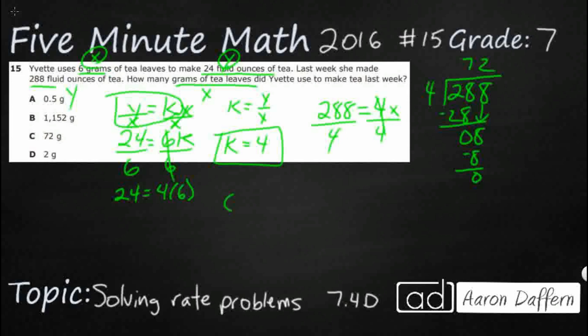So I'm going to say 6 grams over 24 fluid ounces, and then we've got our 288 fluid ounces. We know that we put our like labels together. And let's say we're just looking for X right there. That's the grams of tea leaves. So we know that cross multiplication would work.